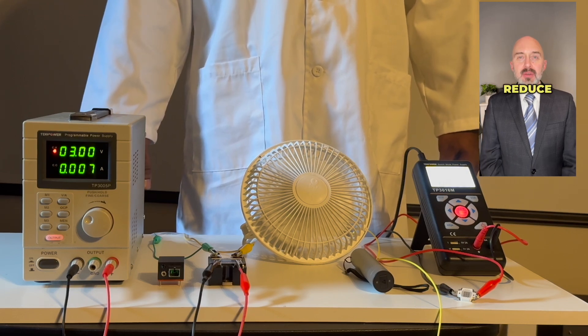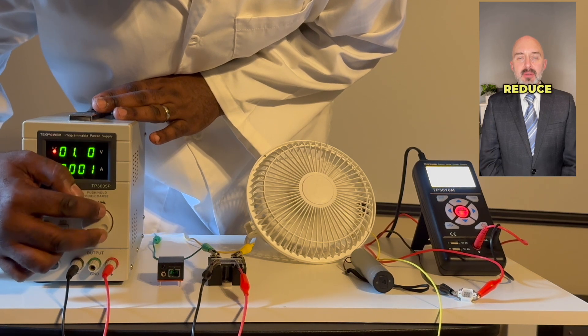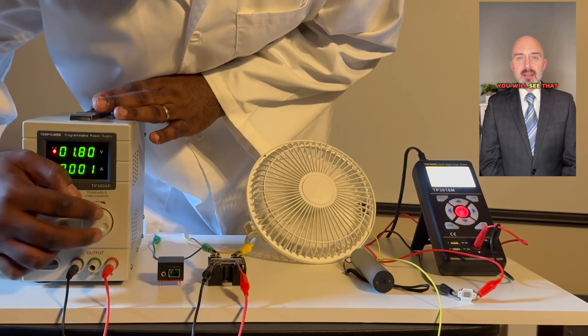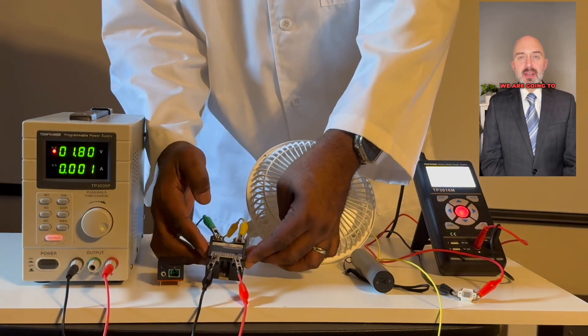We are now going to reduce the power going to the relay to see at what point the relay turns off. As we slowly reduce the power going to the relay, you will see that the relay is no longer powered below 1.8 volts.